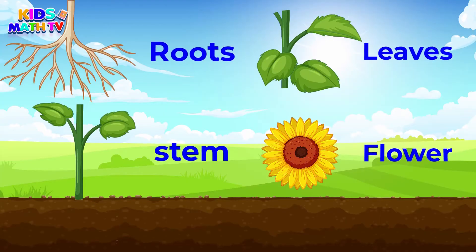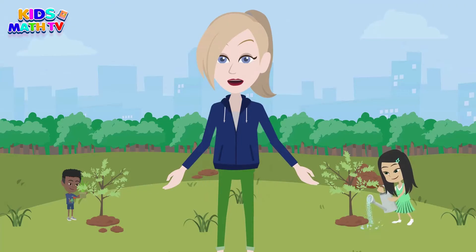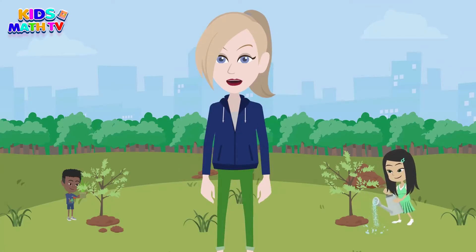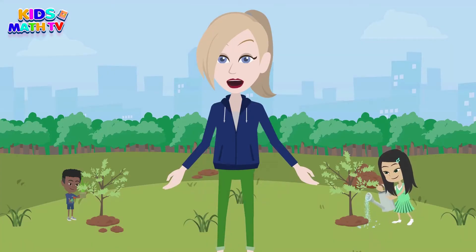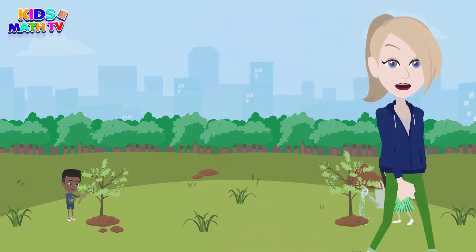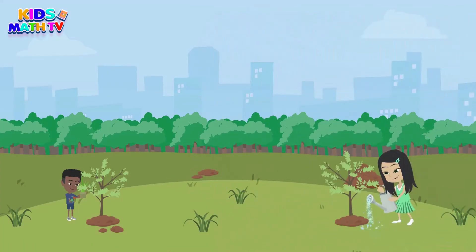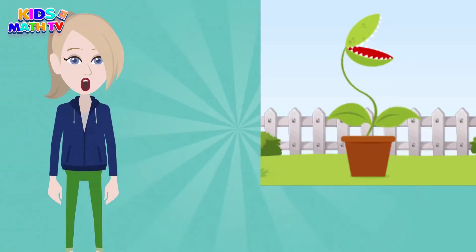Each part of the plant has a special job to help it grow and survive — pretty cool, huh! Now let's talk about some fun facts about plants. Did you know that some plants can move? The Venus flytrap is a type of plant that can trap insects with its leaves.